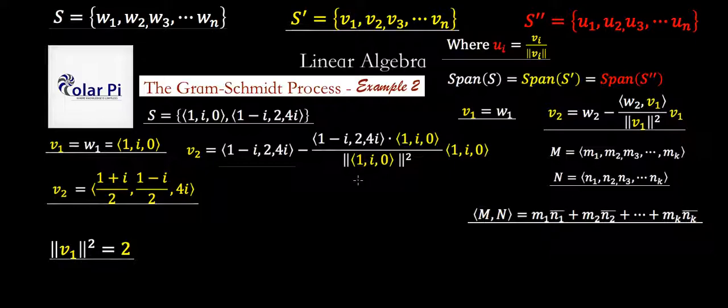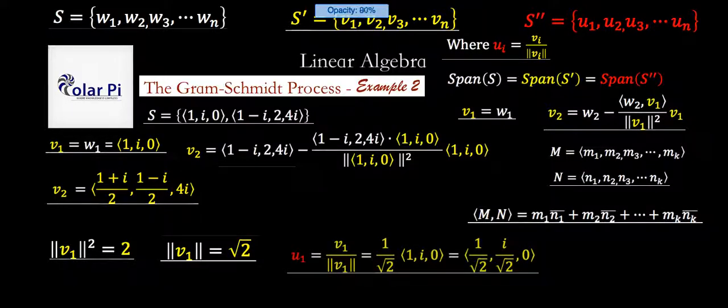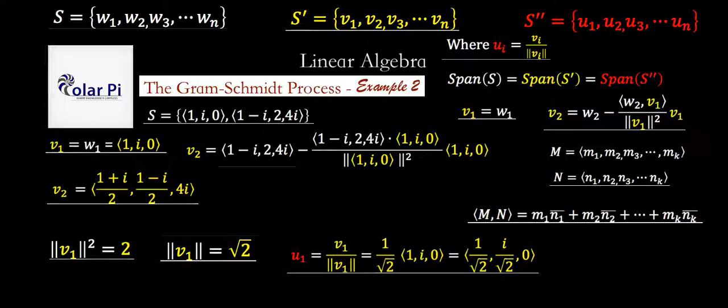And then plus 0 times 0, so that's going to give us 1 times 1 is 1, plus I times negative I is negative I squared, that's 1. So we've got 2 plus 0 times 0 is 0, so we've got a 2. Cool. But this means that the norm of V1 is equal to the square root of 2, and so then that in turn means that V1 divided by the norm of V1, which is U1, is this, and we are done here. All right, cool. I hope you enjoyed this, and yeah.